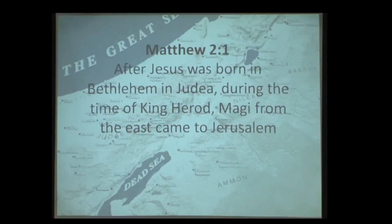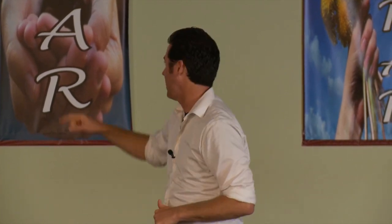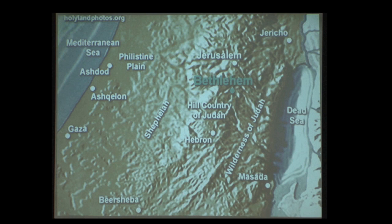Matthew 2:1 says: 'After Jesus was born in Bethlehem in Judea, during the time of King Herod, Magi from the east came to Jerusalem.' Remember Highway 80 — the international route from Egypt through Israel, Syria, Iraq, and into Babylon. Within Israel, the main north-south route is Highway 5, the patriarchal highway, which connects Beersheba to Hebron to Bethlehem, skirting Jerusalem and going up to Shechem. So Bethlehem is right on the main route going to the main place.